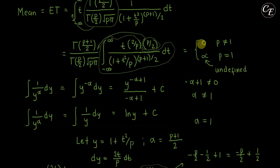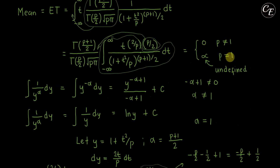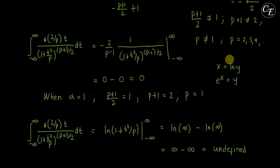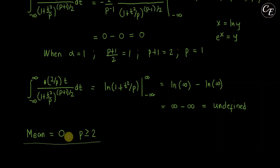In summary, our mean is equal to 0 when p is not equal to 1 (i.e., when p is at least 2), and the mean does not exist when p equals 1. So the mean equals 0 when p ≥ 2, and is otherwise undefined. We have now derived the mean for the t-distribution. Thank you for watching and don't forget to subscribe to the channel.